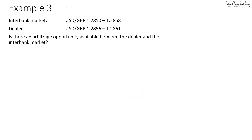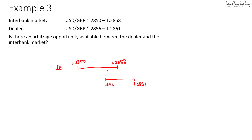For the last example, a dealer quotes 1.2856 to 1.2861. The interbank market is again 1.2850 to 1.2858, and the dealer is quoting 1.2856 to 1.2861. In this case there's an overlap between the two markets, so there will be no arbitrage opportunities available. I can't be buying at 1.2861 and selling at 1.2850, or buying at 1.2858 and selling at 1.2856 — that would cause losses. So if there's an overlap between the two quotes, there is no arbitrage opportunity available.